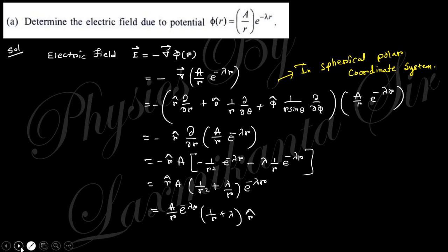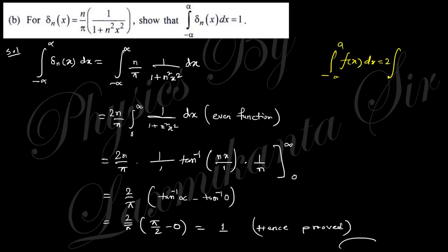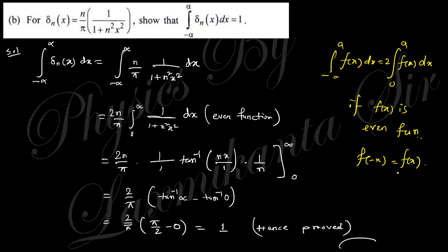If there is any doubt, you must comment in the comment box. The next question is for δₙ(x) = (n/π) · 1/(n² + x²). We need to show that the total integral value equals 1. This is an even function and the limit is minus infinity to plus infinity, so you can write it as 2 times the integral from 0 to infinity, because for an even function f(−x) = f(x).